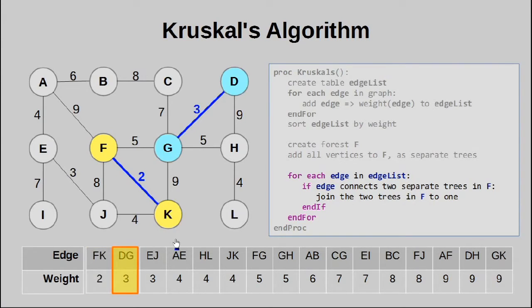Moving on to D and G here, once again, there are two separate trees, and we can connect them together. Notice that I color these a different color from these nodes here. That is because DG is its own tree. FK is its own tree. These two trees are not connected to each other. They have nothing to do with each other.